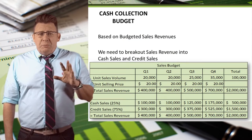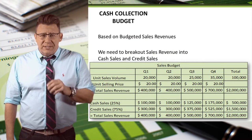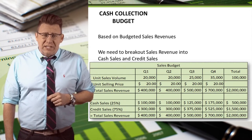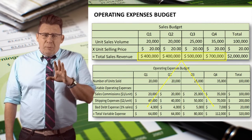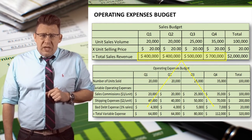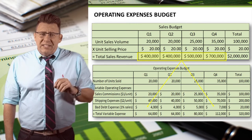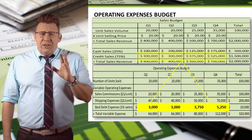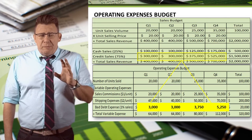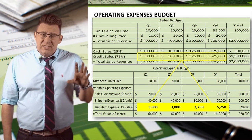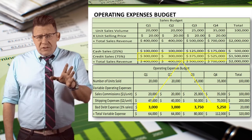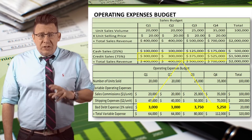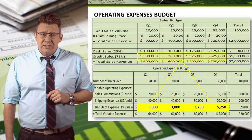To start with, we need to break out our sales between cash sales and credit sales. In this example, let's assume that 25% of sales revenue are cash sales. Let's flash back a moment to the operating expenses budget. In my example, I assume that bad debt expense is 1% of net sales revenue. Often though, a better way of doing it is to base bad debt expense off of net credit sales. So in this video series, I will just keep my example the same, but be aware that you might encounter a problem that uses net credit sales instead of total sales.